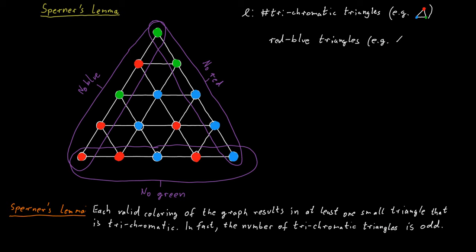Red-blue triangles are small triangles that involve the colors red and blue in their three corners, but not the color green. So in other words, either two of the corners are red and one is blue or two of the corners are blue and one is red. So that's a red-blue triangle.